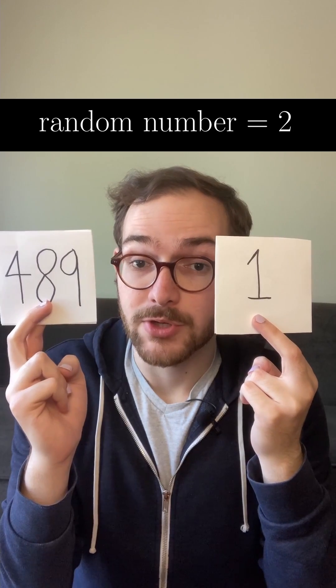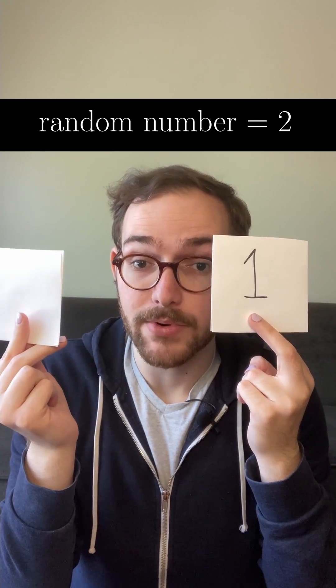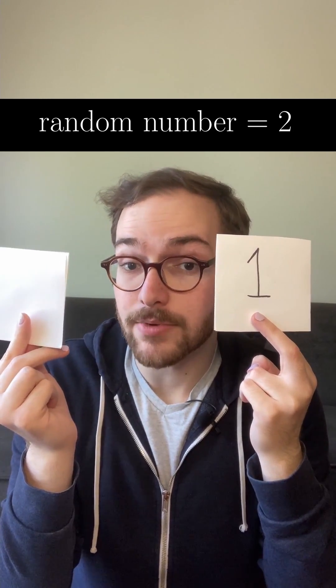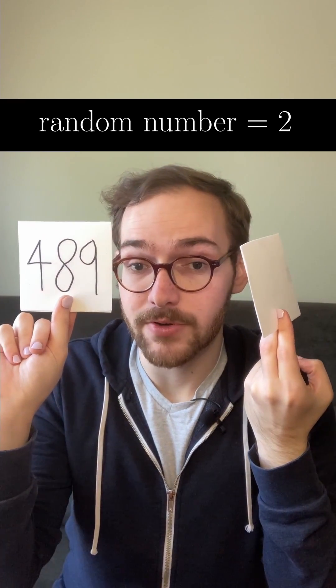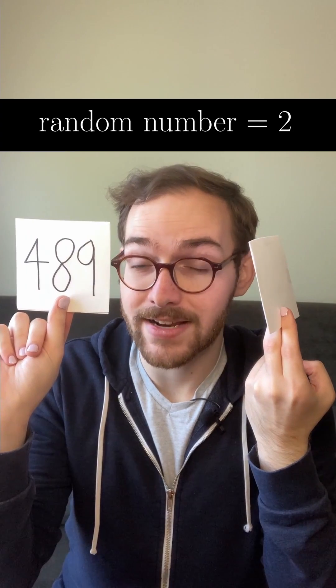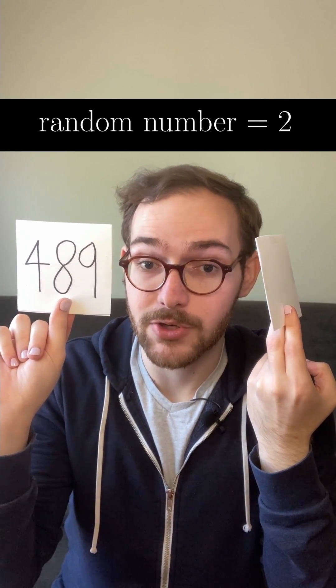For example, if the random number was two and one was the revealed number, then we would say that one is the smaller number because one is smaller than two. And if 489 was the revealed number, we would say that 489 is the bigger number because it's bigger than two.